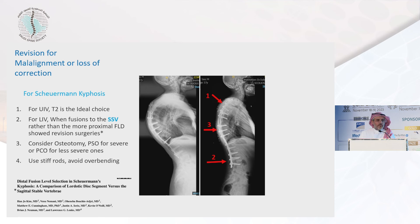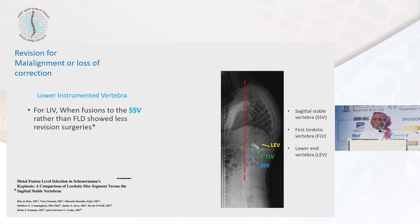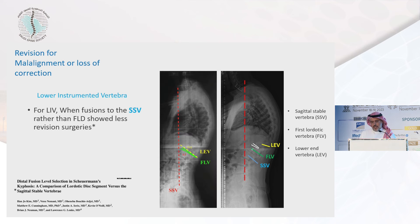We always use a stiff rod and avoid overbending. Regarding the lower instrumented vertebra — fusing to the sagittal stable vertebra versus the first lordotic vertebra shows lower revision surgery rates. The reason: we rely on standing films for planning, and the first lordotic vertebra on standing films can be misleading due to lumbar overcompensation. So the sagittal stable vertebra might be the right option. Sometimes the stable sagittal vertebra is the first lordotic vertebra and sometimes it is not.